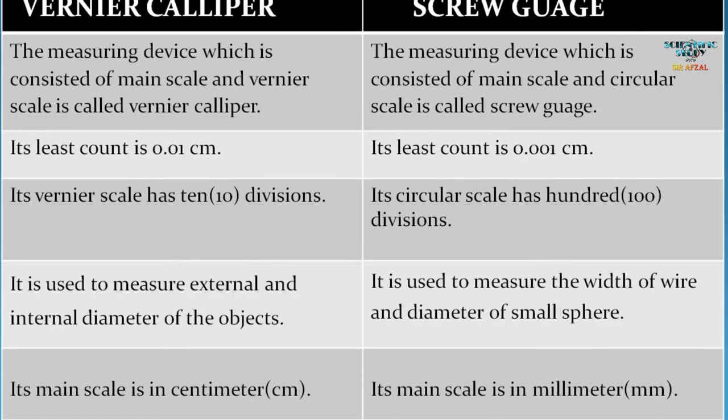Next point: the Vernier caliper is used to measure the external and internal diameter of an object. The screw gauge is used to measure the width of a wire and the diameter of a small sphere.